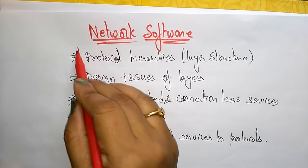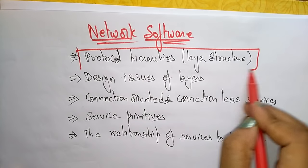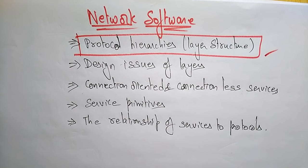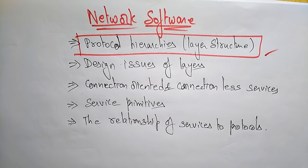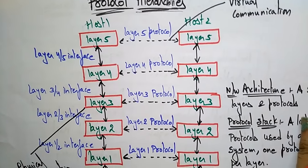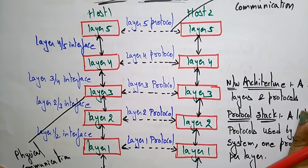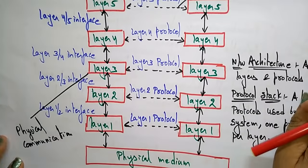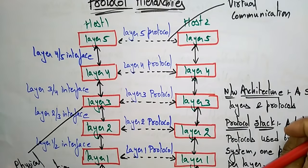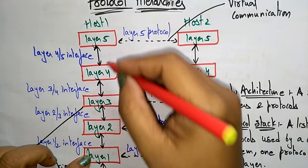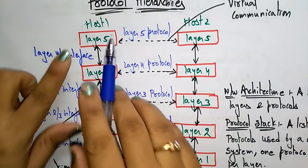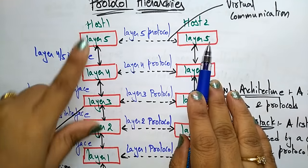Now let us discuss the protocol hierarchy in the network software. This protocol hierarchy has a total of five layers — layers one through five.